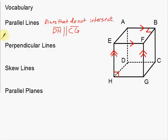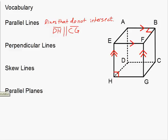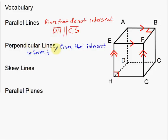Next we have perpendicular lines. Perpendicular lines are lines that intersect to form four 90 degree angles. When two lines intersect, they form one angle here, one over here, one there, and one there — so all four of those angles are actually 90 degrees. So to be more precise: perpendicular lines are lines that intersect to form four 90 degree angles.